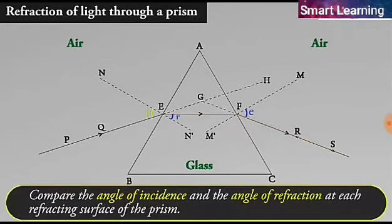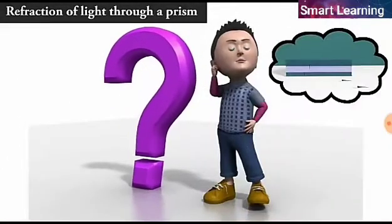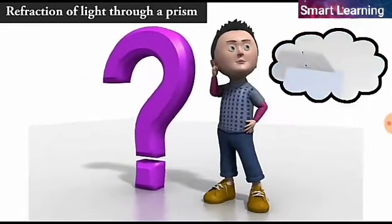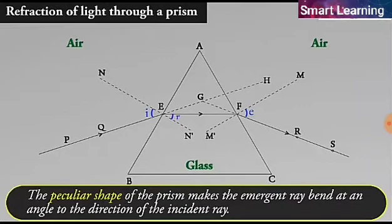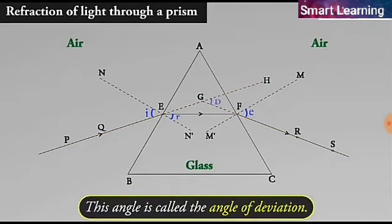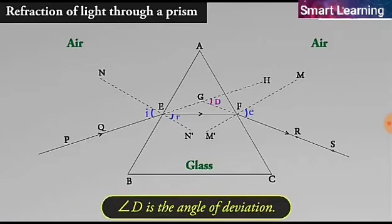Compare the angle of incidence and the angle of refraction at each refracting surface of the prism. Is this similar to the kind of bending that occurs in a glass slab? The peculiar shape of the prism makes the emergent ray bend at an angle to the direction of the incident ray. This angle is called the angle of deviation. In this case, angle D is the angle of deviation.